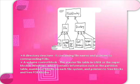A volume control block — the master file table in Unix or the super block in Windows — contains information such as the partition table, number of blocks on each file system, and pointers to free blocks and free FCB blocks.